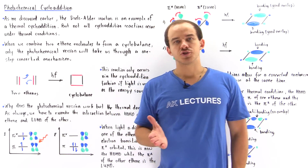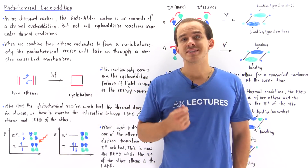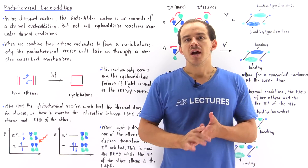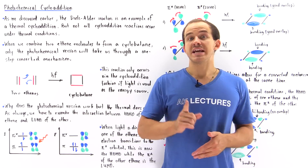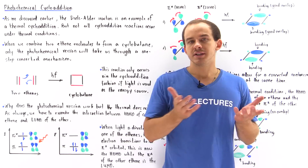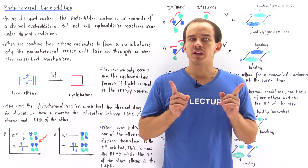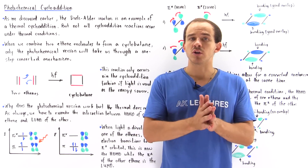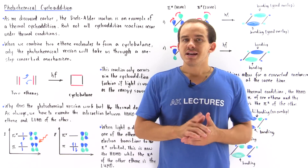The Diels-Alder reaction is an example of a thermal cycloaddition reaction. But not all cycloaddition reactions take place under thermal conditions. Some take place under photochemical conditions, and this is what we're going to focus on in this lecture.